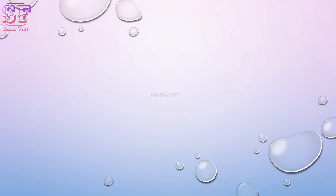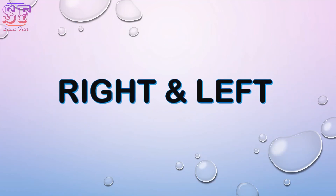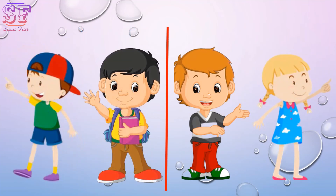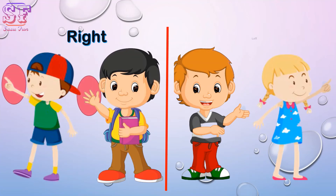Our eighth concept is right and left. Right — we are right. Left — we are left. Right hand and left hand. Can you guess which one is right and which one is left? Yes! These are right and these are left.